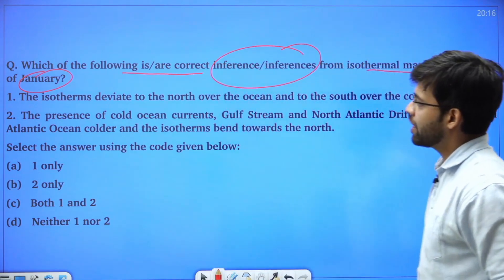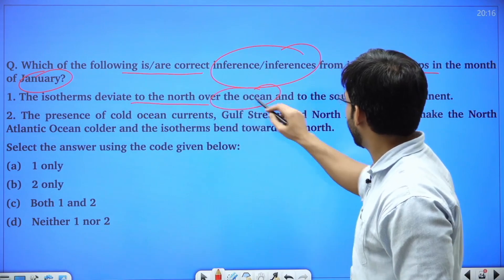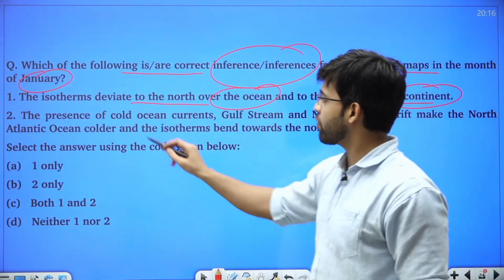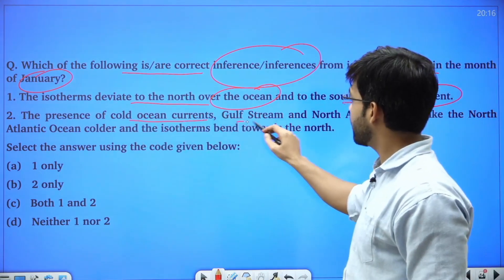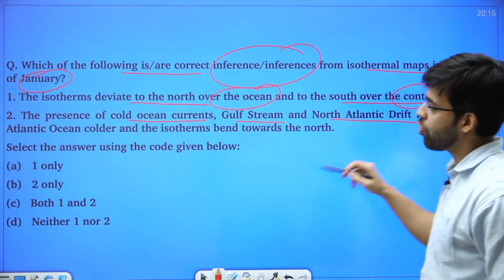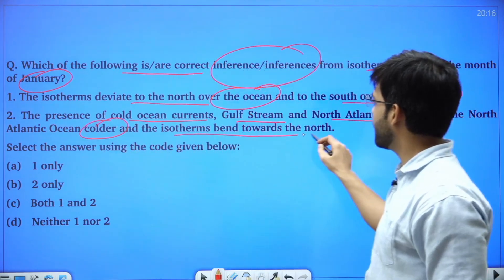First statement: the isotherms deviate to the north over the ocean and to the south over the continent. Second: the presence of cold ocean currents, Gulf Stream and North Atlantic Drift, make the North Atlantic Ocean colder and the isotherms bend towards the north.